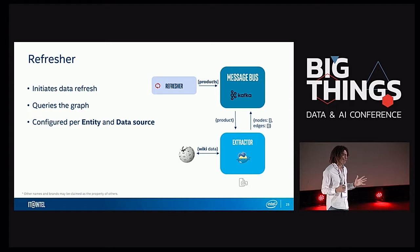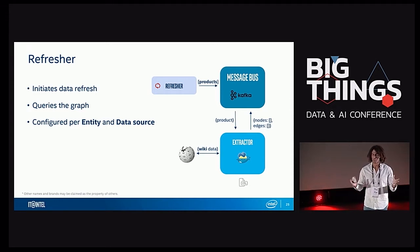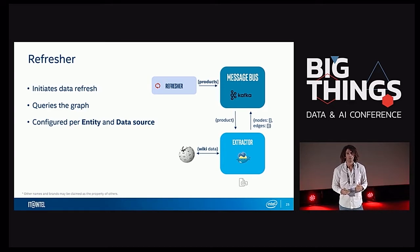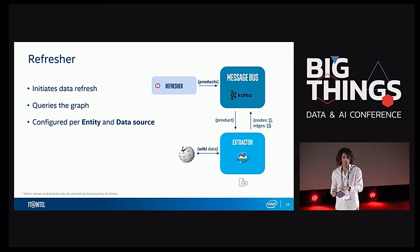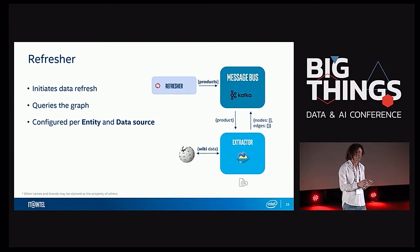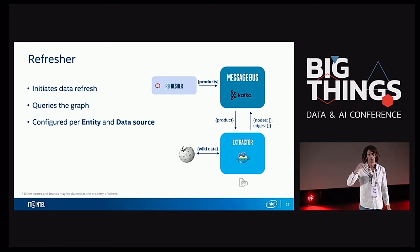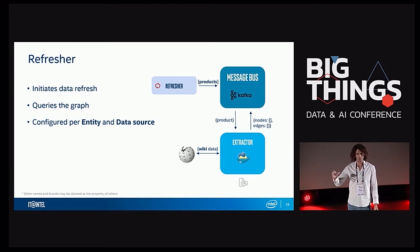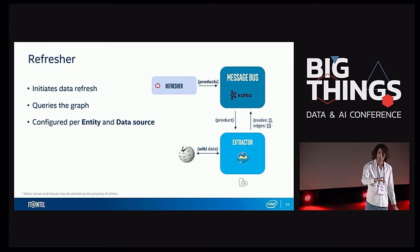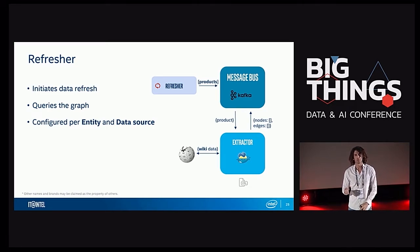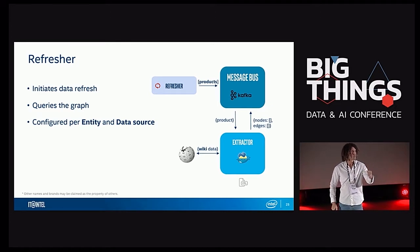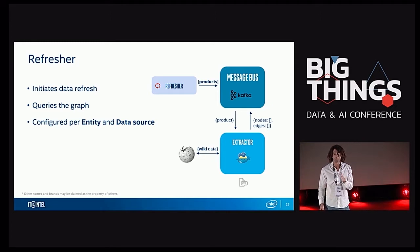The last piece was: we're going out to the world and getting information, but how do we keep it relevant? So to keep data relevant, we created the refreshers. Their entire role is to trigger extractors. They're the only ones that query the database, since they slowly traverse the graph looking for stale nodes. Once a stale node is found, they trigger the relevant extractor to get new information and keep that node up to date. They are also configured per entity and per data source.